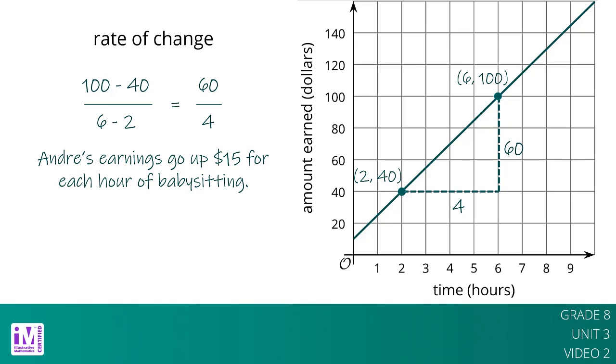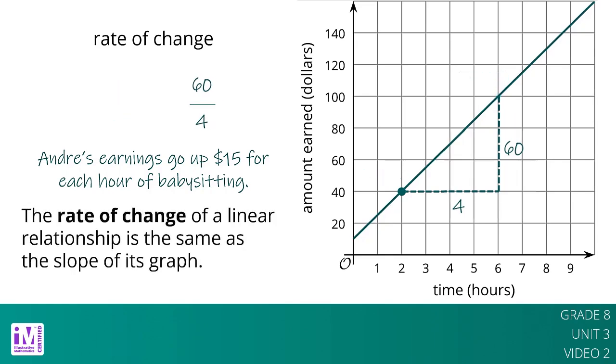Notice that this is the same way we calculate the slope of the line. That's why the graph is a line and why we call this a linear relationship. The rate of change of a linear relationship is the same as the slope of its graph.